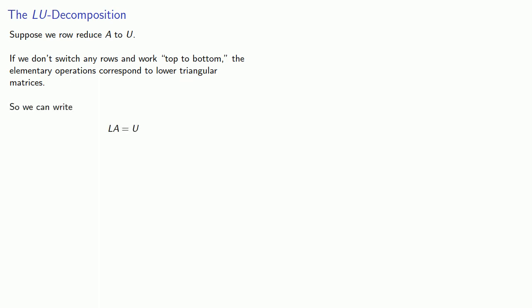And this leads to what's called the LU decomposition. Suppose we row reduce a matrix A to U. If we don't switch any rows and work top to bottom, the elementary operations correspond to lower triangular matrices, so we can write LA equals U.